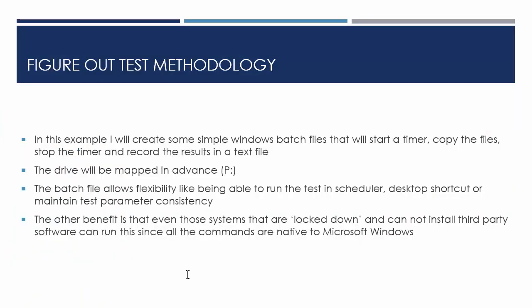For the test methodology, I'm going to create a simple Windows batch file. It's going to start a timer, copy the files, stop the timer, and record the results in a text file. What I'm going to use is whatever native commands I have in Microsoft, because a lot of my clients will say they can't install anything on their machine - they have software to block any type of software you try to install, and can't run things off a portable USB flash drive. Batch files you can create in any Windows operating system, and the commands I'm going to show you are in any Microsoft operating system. The drive I'm mapping in advance is P, for example - and that's an example of what you want to document as you go. The batch file allows flexibility to run the test via scheduler, a desktop shortcut, or maintain test parameter consistency. If you do have a batch file, anybody can run it anytime and you'll always get the same methodology - not the same results, the same methodology.